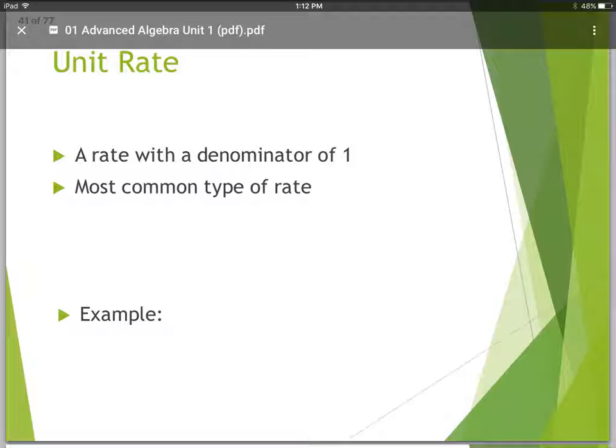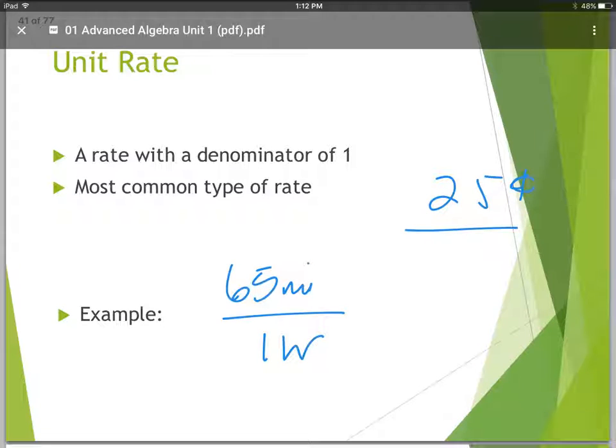Unit rate is a rate with a denominator of one. Most common type of rate. Examples, again, denominator of one, so 65 miles per one hour, or 25 cents for one gumball. So unit rate. This is what folks use when they make comparisons, when they're bargain shopping, price shopping. You know, the dollars per ounce, things like that.